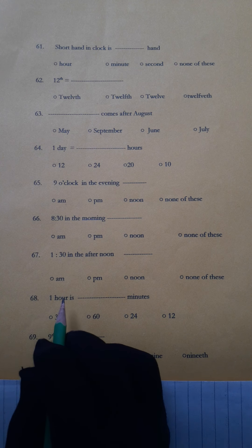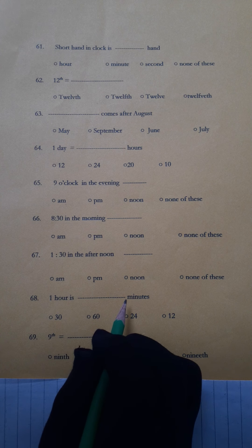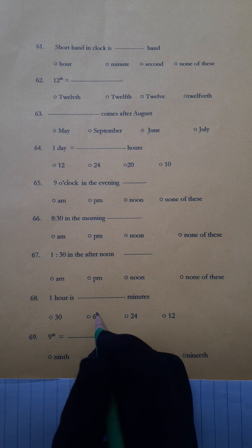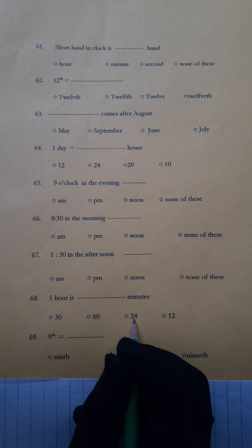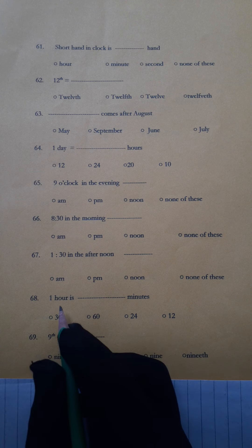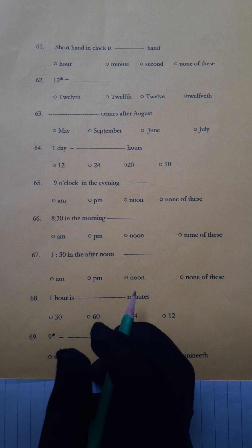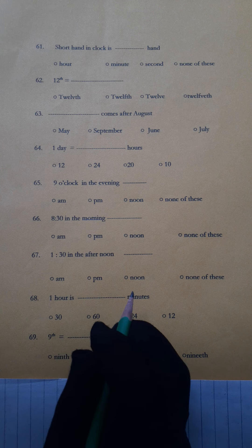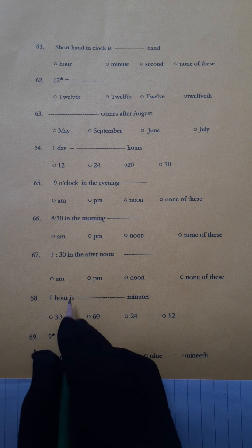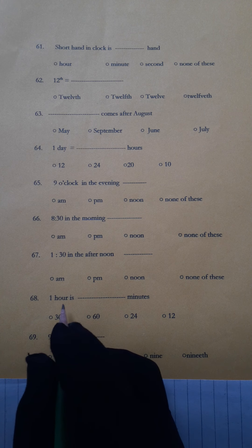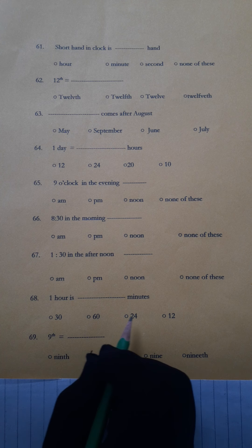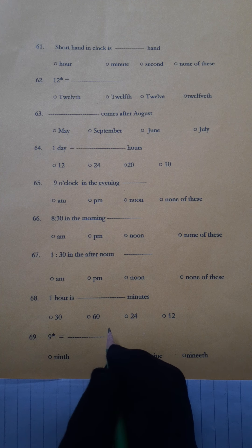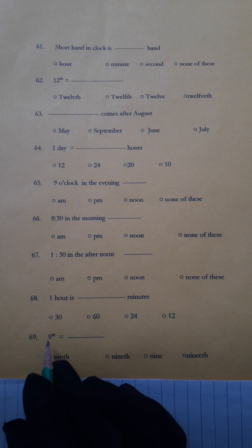Number 68: One hour is how many minutes? Options are 30, 60, 24, or 12. The question is: one hour equals how many minutes? Write the correct option on your answer sheet.